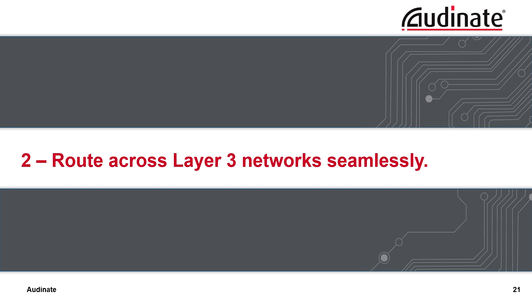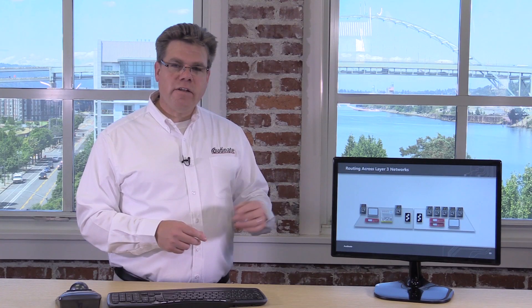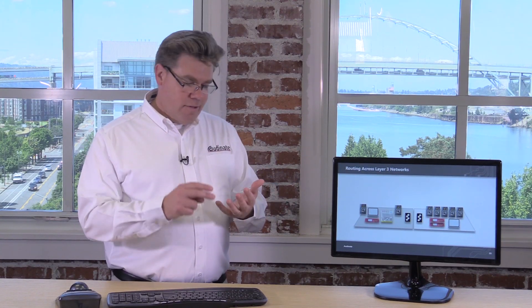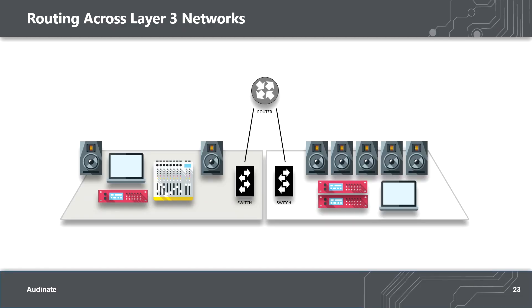Another nice feature of Dante Domain Manager is the ability to cross a Layer 3 network — that is, the ability to break the limitation of a single subnet — and Dante Domain Manager does this quite transparently with no need to get IT involved. For the non-IT folks, let's first explain the structure and challenge of a Layer 3 network. Even for a modest size organization, an IT department will segment the network using VLANs. This could be done for a number of reasons: security, simplicity of management, or bandwidth efficiency. The VLANs are then joined with routers, allowing devices to link together again.